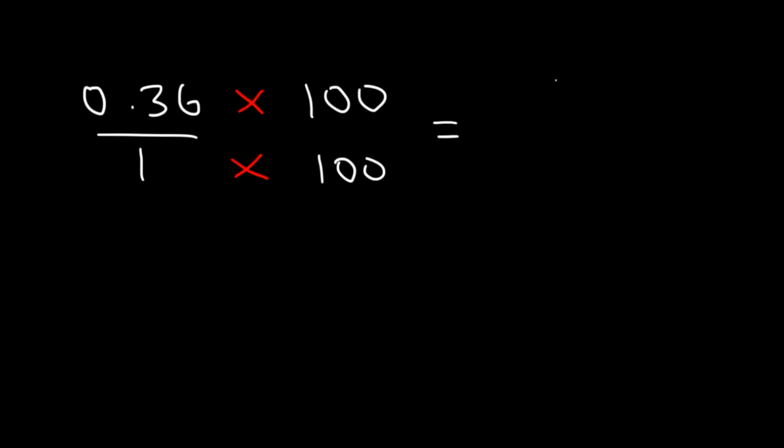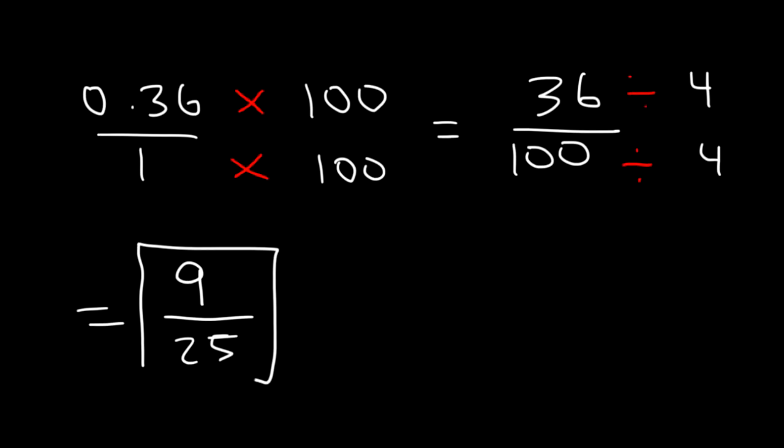0.36 times 100 is 36. And 1 times 100 is 100. And now, let's reduce it. Both numbers are divisible by 4. 36 divided by 4 is equal to 9. 100 divided by 4 is 25. So, 0.36 is 9 over 25 as a fraction.